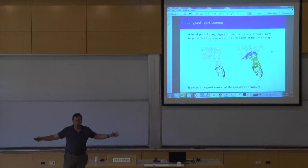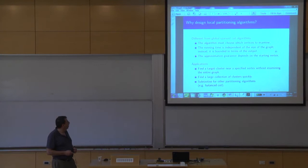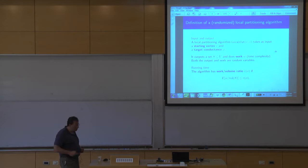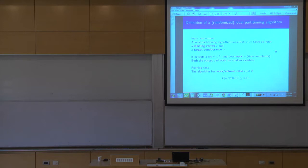That would be a local partitioning algorithm. Rather than take the whole huge graph and partition it into small sets, we just want to find a good neighborhood of a given node with a small boundary. It's different from a global algorithm, because a global algorithm has to examine the whole graph. Here we are hoping just to examine a small neighborhood of the given node. We have some target conductance phi, and suppose the graph has a good cut with that conductance phi. We have no hope in general of finding the optimal cut, but we want to approximate it.